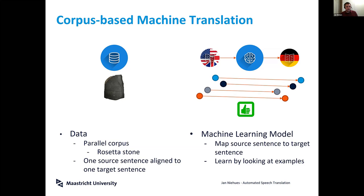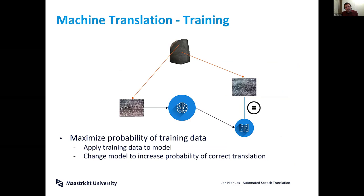This brings us to the first step in machine learning models: training and translation. In training we rely on our data — that's why the data is so important. Think of the Rosetta Stone: you take one language as your source and feed those sentences to the model, then let the model translate.